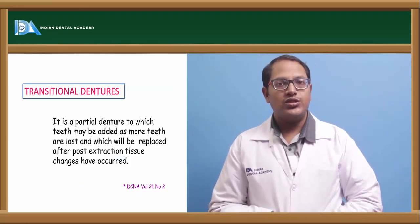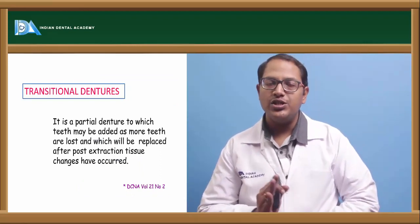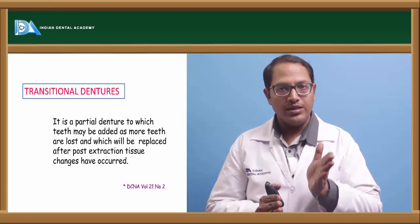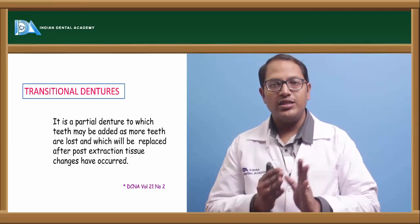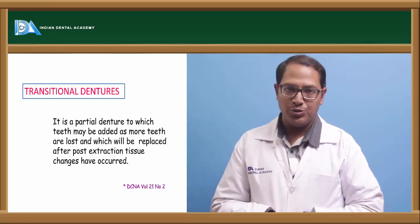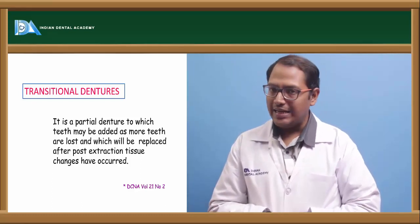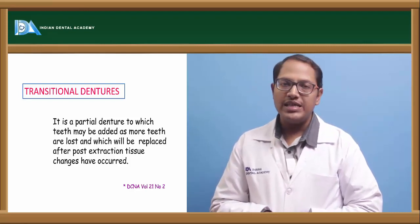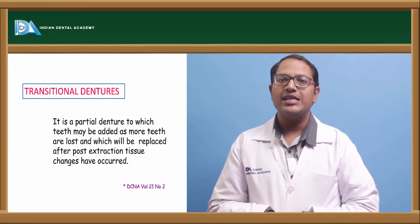Now what are transitional dentures? The name tells us clearly — it is a transitional denture. A period that is transitional from the time of extraction to the actual complete denture; till that time, the denture which is worn is called a transitional denture. The definition goes as: it is a partial denture to which teeth can be added, or teeth that are lost which will be replaced after the post-extraction tissue changes have occurred.